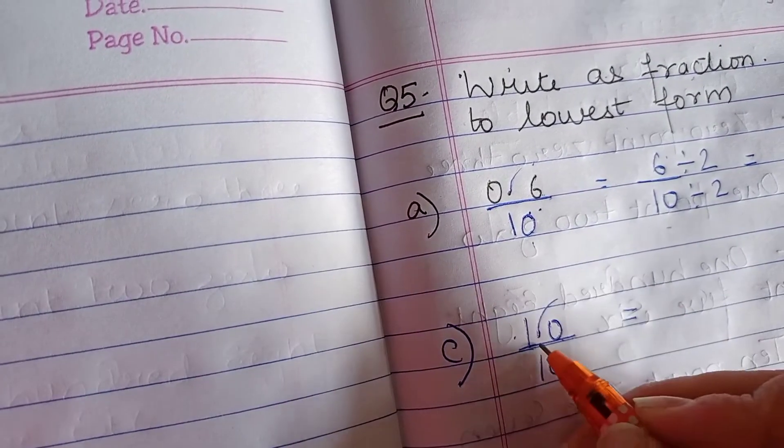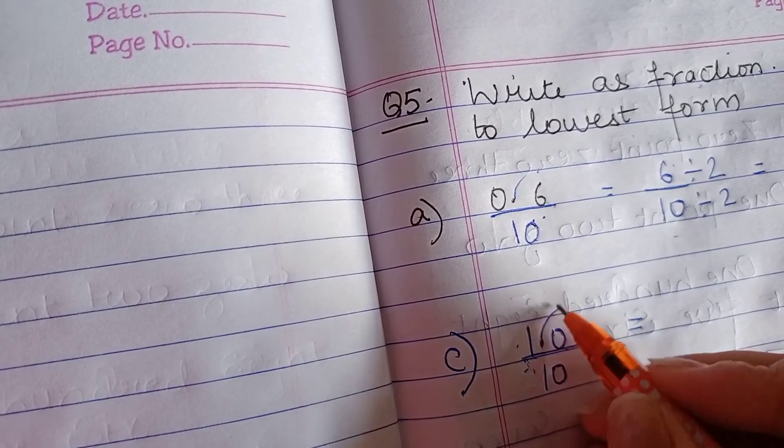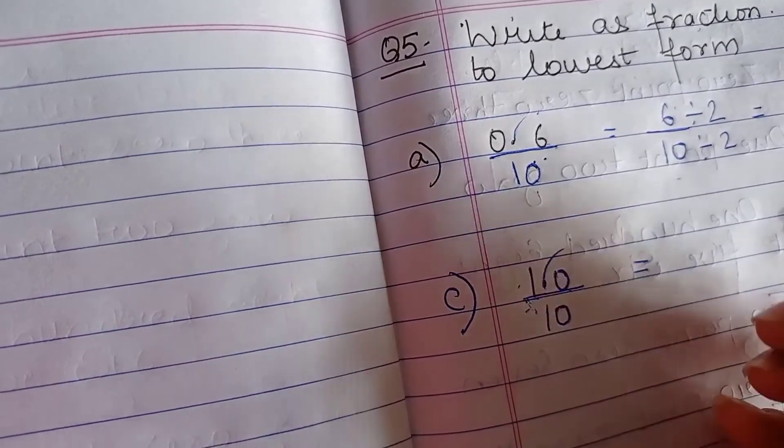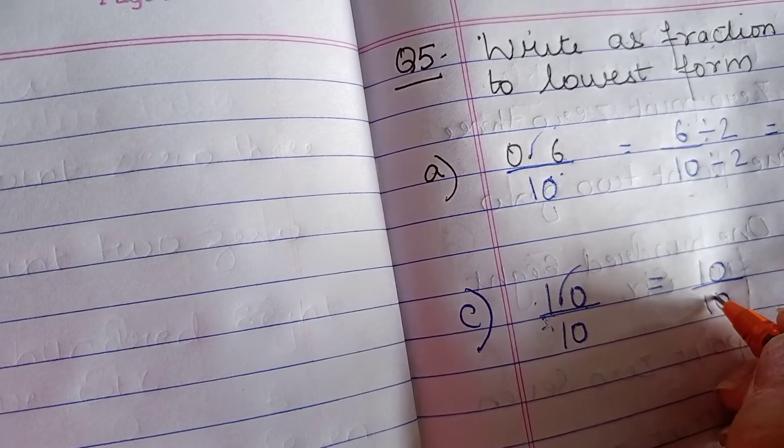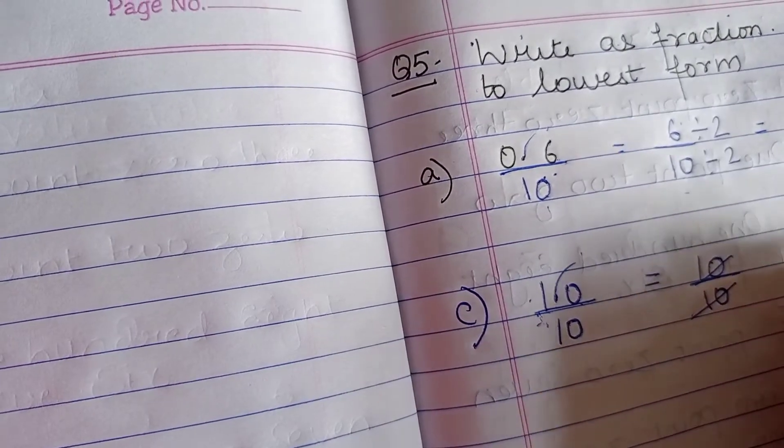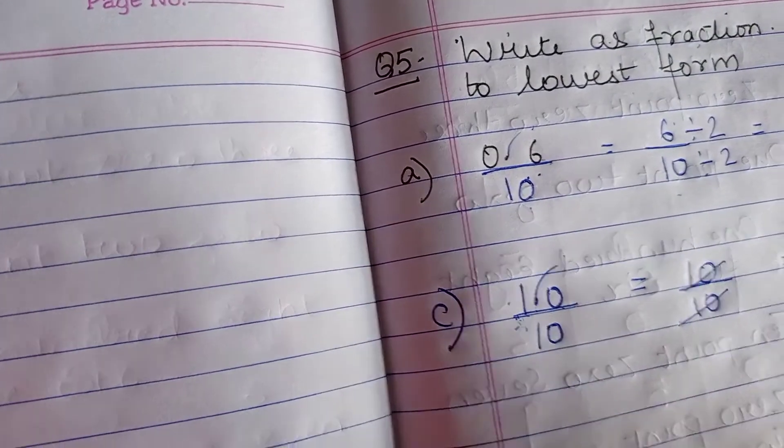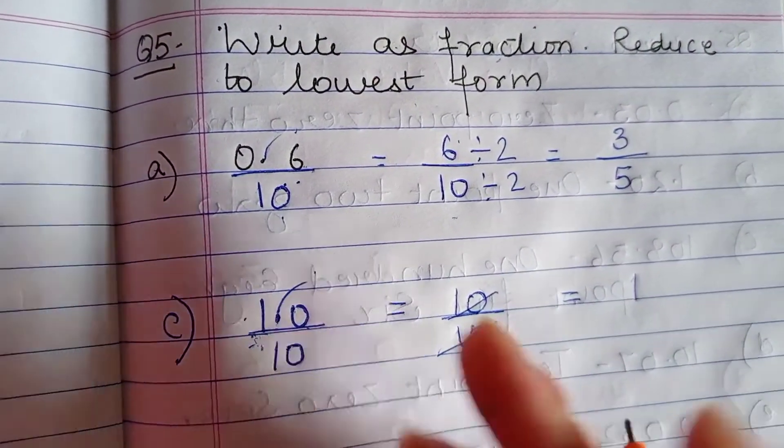There is one number before decimal. If we will remove this decimal it will become 1 0, 10. And this number also 10. Reduce it to lowest form. You will get 1 as your answer.